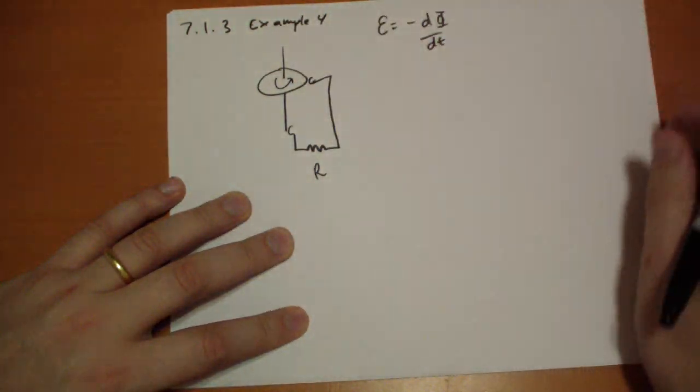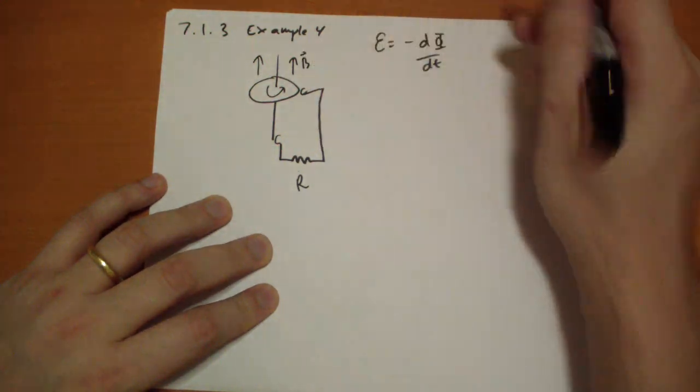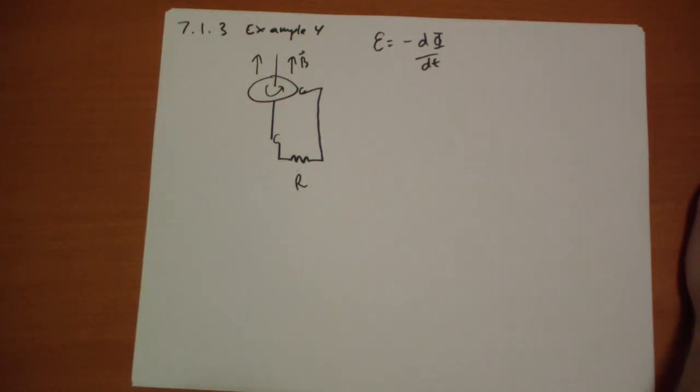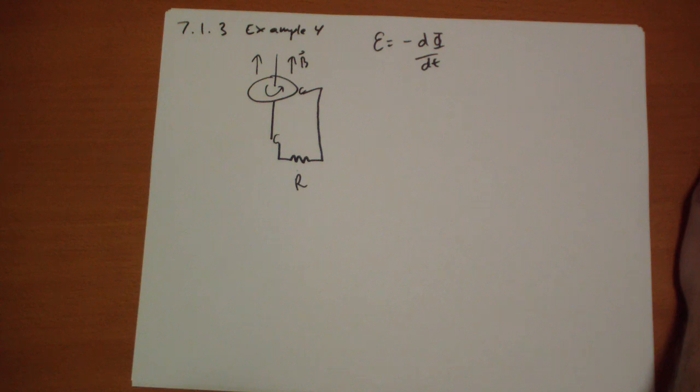And this thing is spinning around doing its business. And there's a magnetic field pointing straight up all throughout the thing. And the question is what is the EMF due to magnetic flux? And it looks like the flux isn't changing over time.